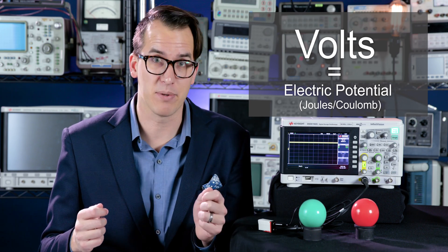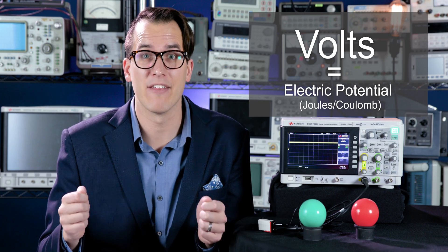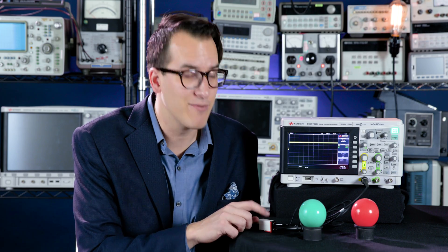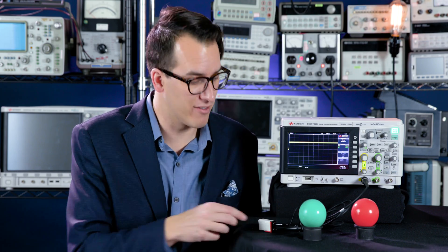So all this to say that all voltage measurements and values are simply a difference in electric potential between two points in space. So when I say that this is a nine volt battery, what that means is that there's nine volts of electric potential between the two terminals.